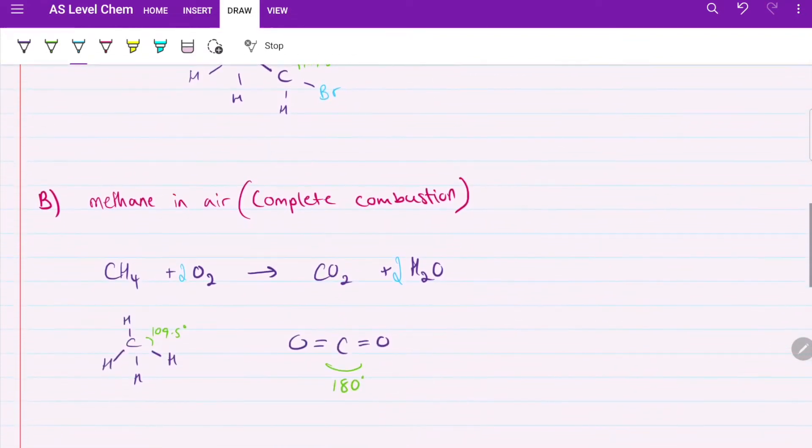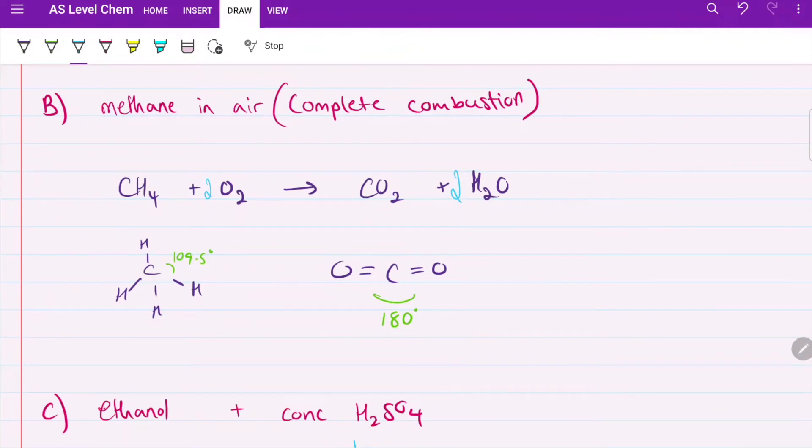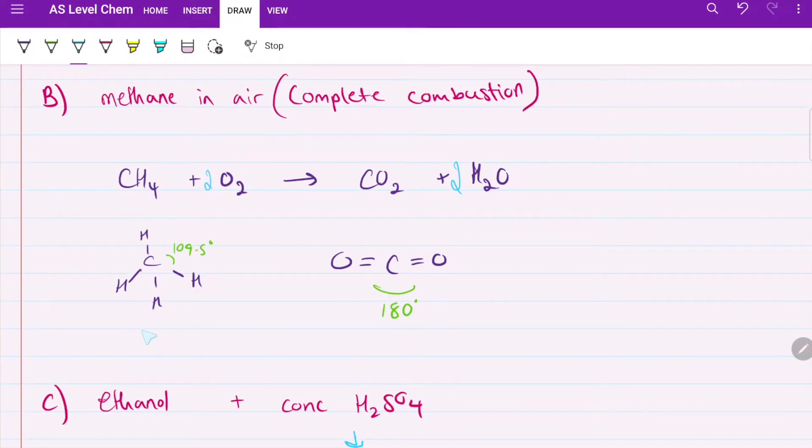Then we move on to part B, complete combustion of methane in air. I wrote out the equation and balanced it. We have the same number of hydrogens, oxygen, and carbon on each side. If we draw out CH4, we have a tetrahedral. If we draw out CO2, we have a linear shape. We're going from 109.5 to 180 degrees. That's an increase, and they asked us for a decrease. So then B is out.